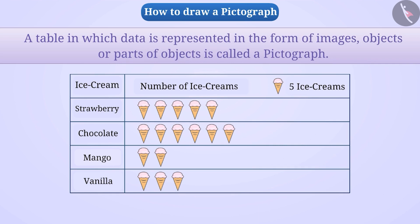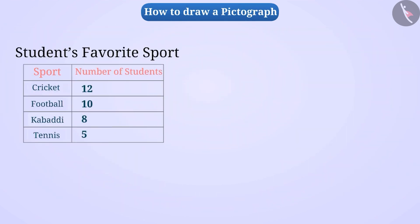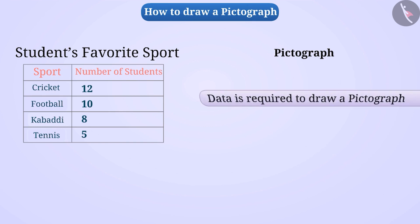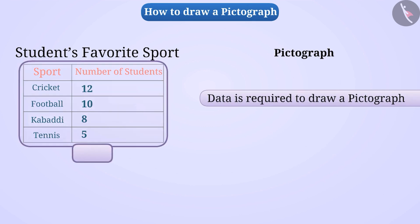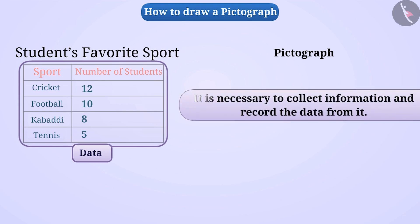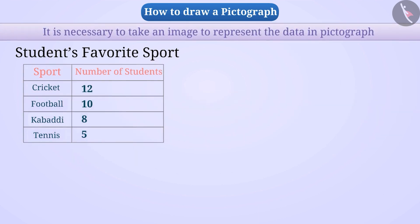Today let's understand how pictographs are made with an example. Based on the choice of students in a school, a table of the most favourite spot is drawn. Let's represent these figures with the help of a pictograph. To draw a pictograph, it is necessary to have data. Here we are given the data, but if it is not given, we must first collect information related to the favourite spot and record the data.